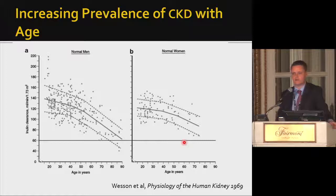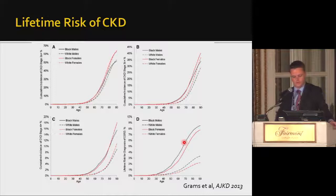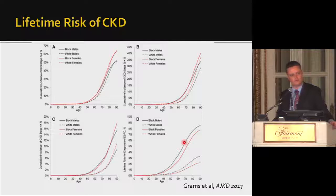The question of small declines in renal function in the elderly is important. The fact that GFR declines with age has been recognized for a long time — a physiology textbook from the 1960s already showed a clear relationship between kidney function and age. A study published in AJKD in 2013 used a model to estimate lifetime risk of CKD from NHANES data, though estimates may be slightly inflated due to difficulty accounting for competing risk of death without longitudinal follow-up.